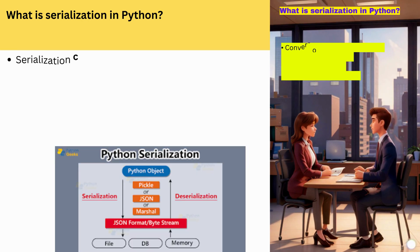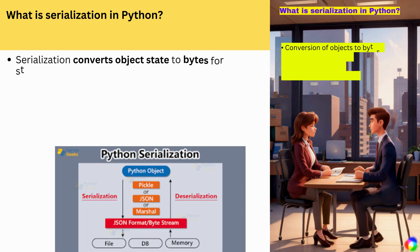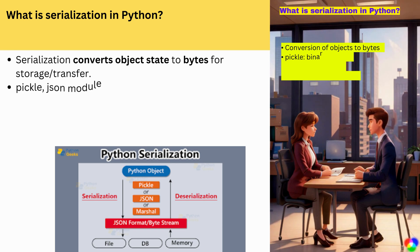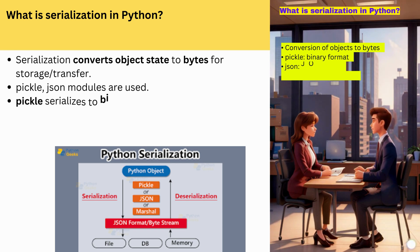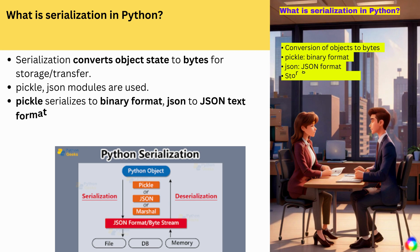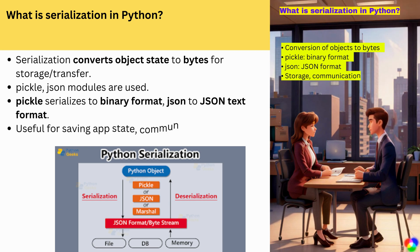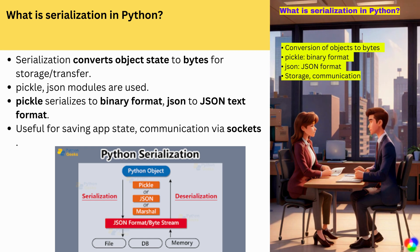What is serialization in Python? Serialization converts object state to bytes for storage or transfer. The pickle and JSON modules are used. Pickle serializes to binary format; JSON serializes to JSON text format. Useful for saving app state and communication via sockets.